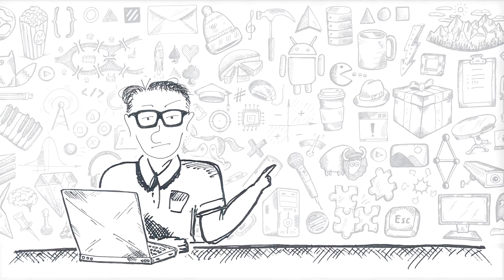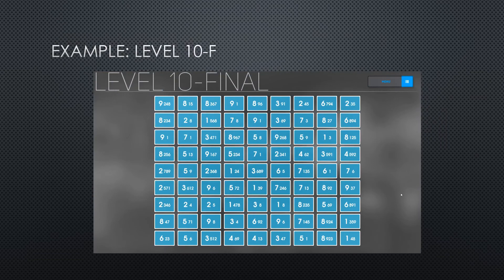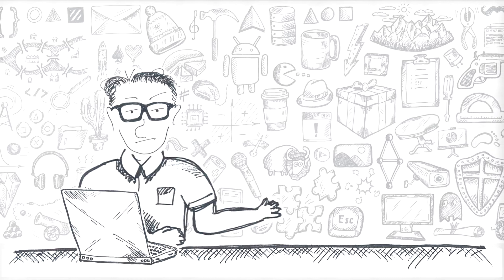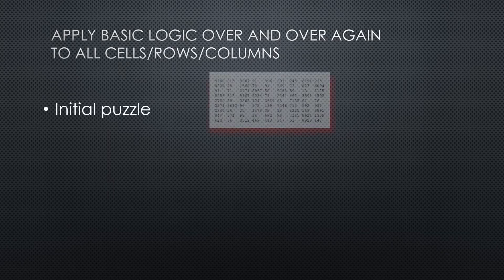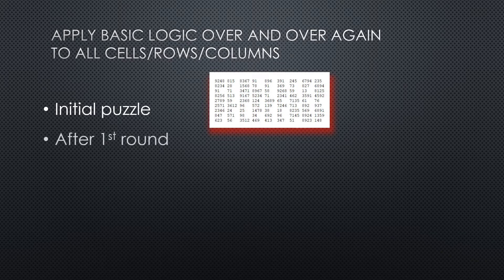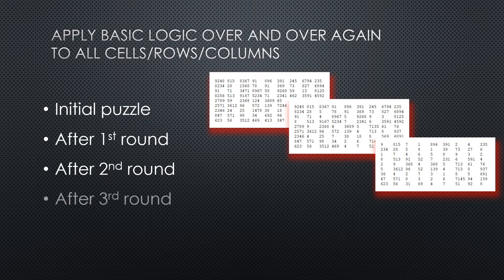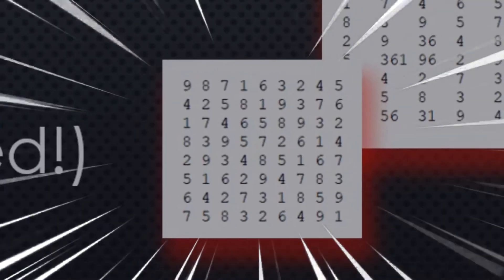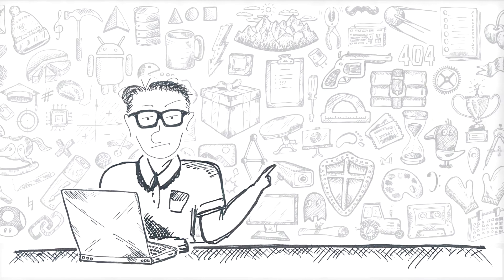Even seemingly tricky levels like 8-1 or 10-F, which are the sort of mid-boss fights of both games, can be solved just by repeatedly applying those two rules. This is, for example, what it is going to look like for the 10-F level. With each iteration we apply those two rules to every row and every column, and every time it gets a little thinner. And after just four iterations — puff — it is solved. And the same goes well for 90% of levels you encounter in both games.